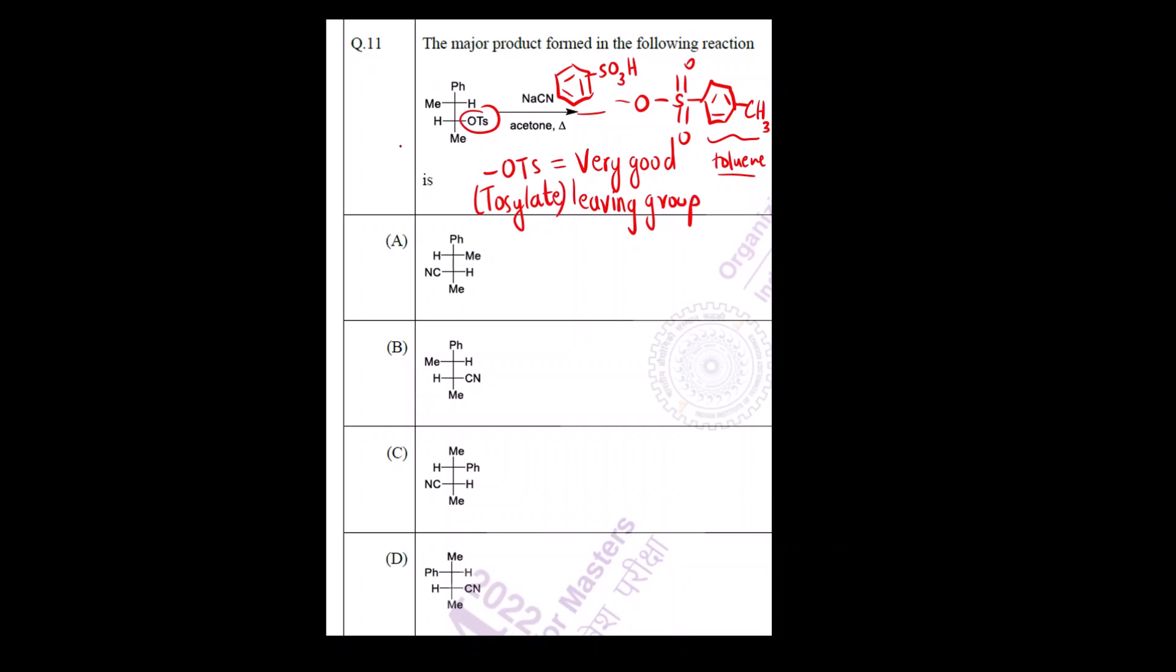From this we can determine which type of reaction. CN minus is a nucleophile. So this is going to be a nucleophilic substitution. Now is it going to be SN1 or SN2? If I remove OTS, I will get Ph, Me, H and a carbocation. This carbocation carbon is attached to two other carbons, so it is a secondary carbocation. The secondary carbocation has equal probability of formation via SN2 and SN1. But since the carbocation formed is not very stable, we will follow SN2 mechanism.